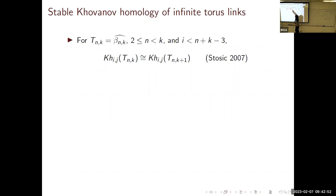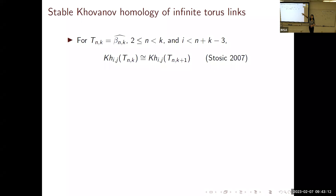Here, N is the number of strands and K is the number of full twists, giving you the torus links T(N,K). What we mean by stability is that the homology groups are isomorphic for low homological grading i. So as long as you look at a homological grading that is low enough, the homology groups are isomorphic going from K full twists on N strands to K+1 full twists—up to a degree shift.